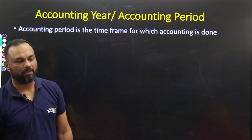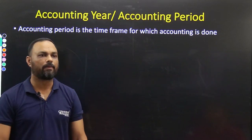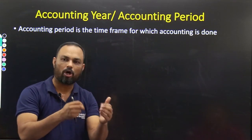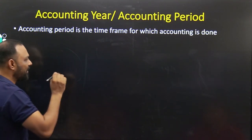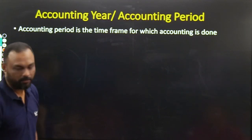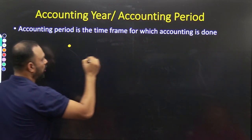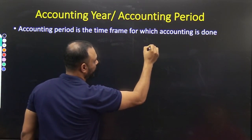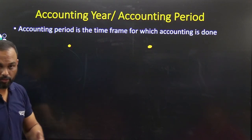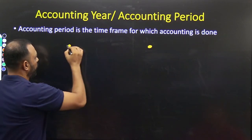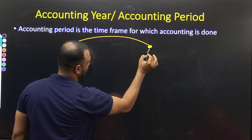Let me give you an example. In school, you can see a race. When someone does a race, there is a starting point and there is a finishing point. The participants start from point A and go to point B.